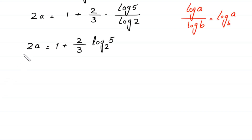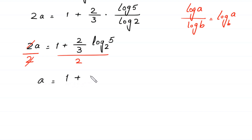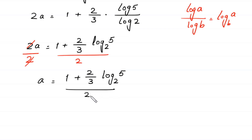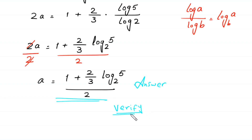Now from here we divide both sides of this equation by 2. This 2 cancels and a is equal to 1 plus 2 over 3 times log base 2 of 5, all divided by 2. This is the value of a and this is the final answer of this equation.